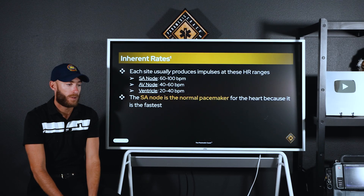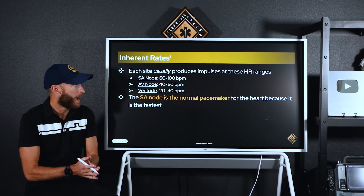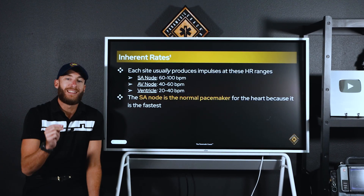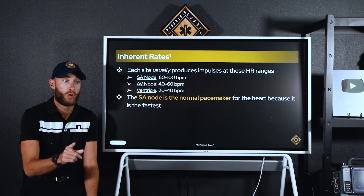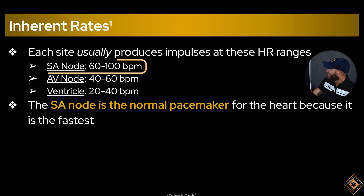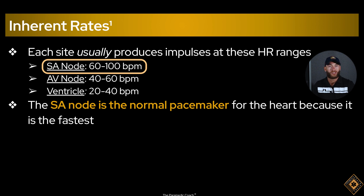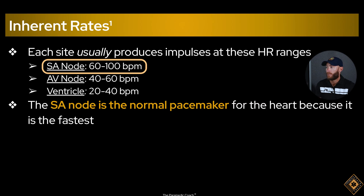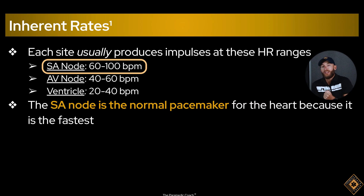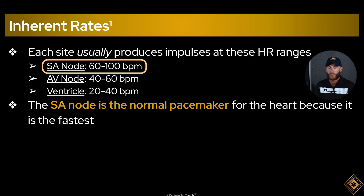The EKG can tell us, for example, whether a patient is having a heart attack — that's very important to a paramedic. The heart has different starting points. The SA node is where your normal sinus rhythms start: normal sinus, sinus tach, sinus bradycardia, sinus arrhythmia. When the SA node is in charge, the heart rate is 60 to 100 beats per minute under normal resting conditions.